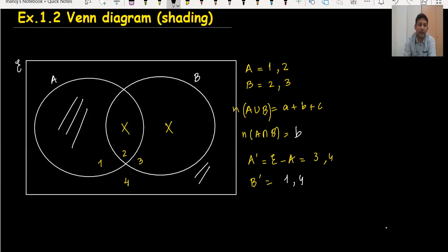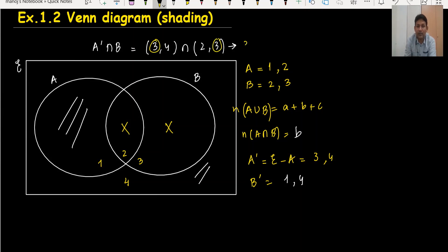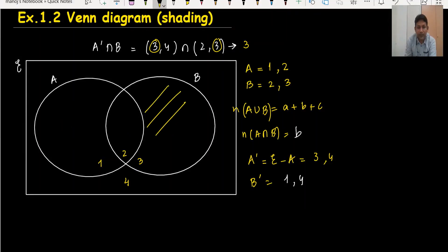If you want to find the area of A complement intersection B, this is very important. First, which area is for A complement? A complement has areas 3 and 4. And which areas are for B? B has areas 2 and 3. So A complement intersection B means the common area between {3,4} and {2,3}, which is area 3. I will shade only this part — that is the result for A complement intersection B.